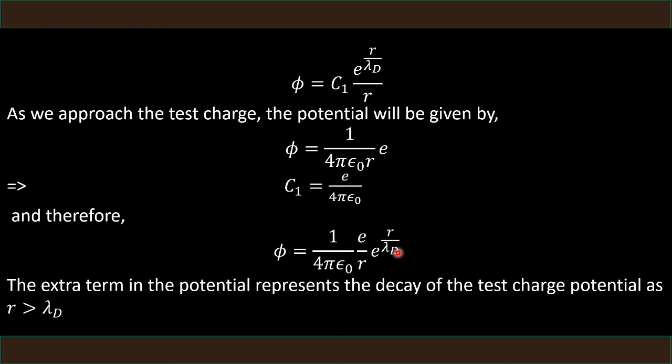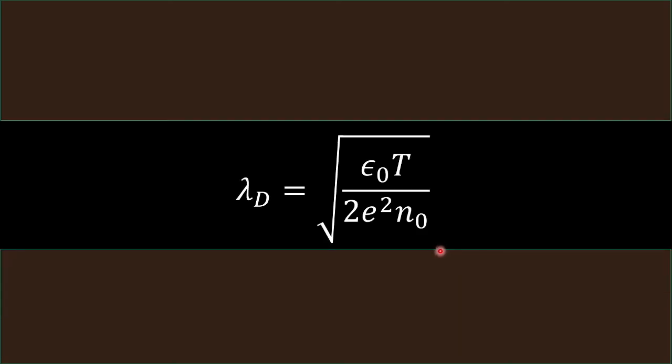The Debye length λD is given by: λD = √(ε0T / 2e²N0).